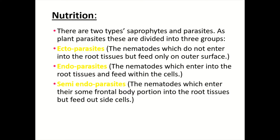Regarding nutrition and how nematodes obtain it, there are mainly two types: saproph ytes and parasites. As plant parasites, they are divided into different groups. Ectoparasites are nematodes that do not enter root tissues but feed externally on the outer surface of roots. Endoparasites enter into root tissues and feed within the cells. Semi-ecto-endoparasites enter part of their front portion into the root tissues and feed from outside the cells.